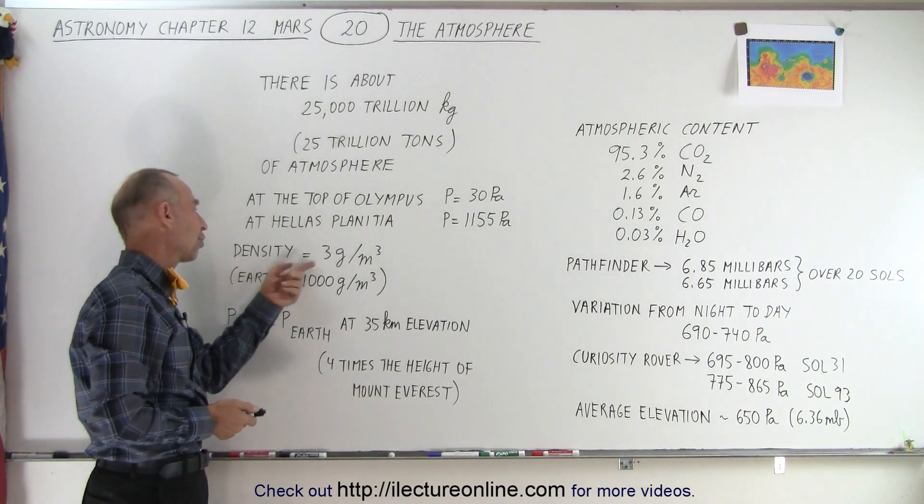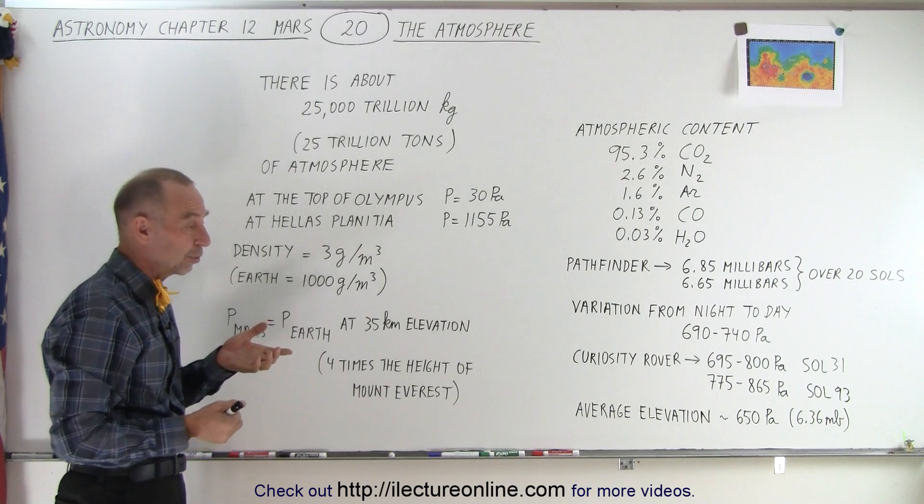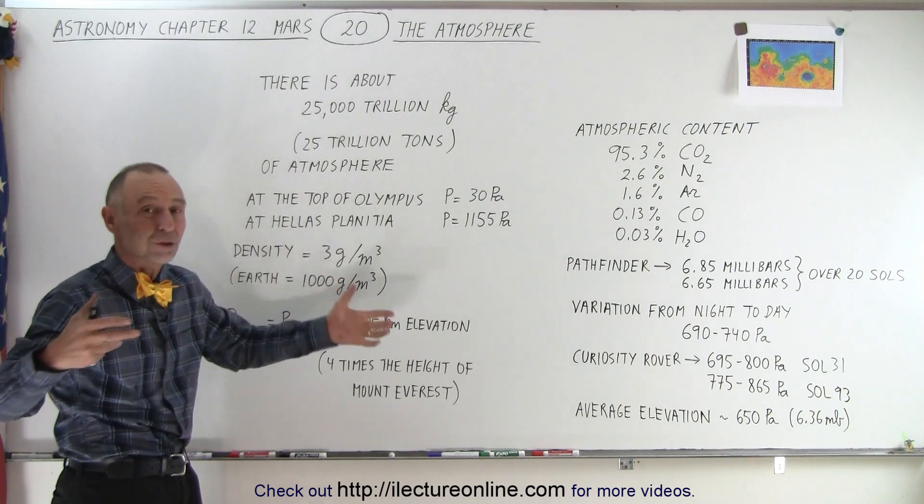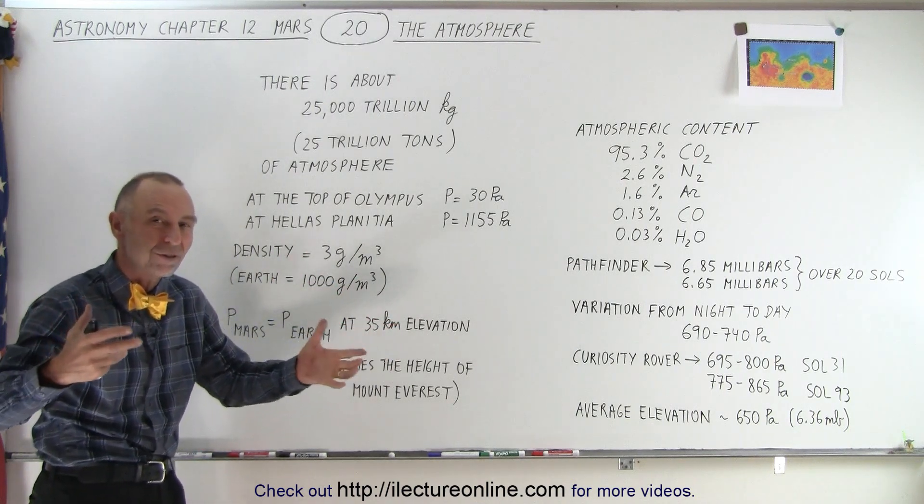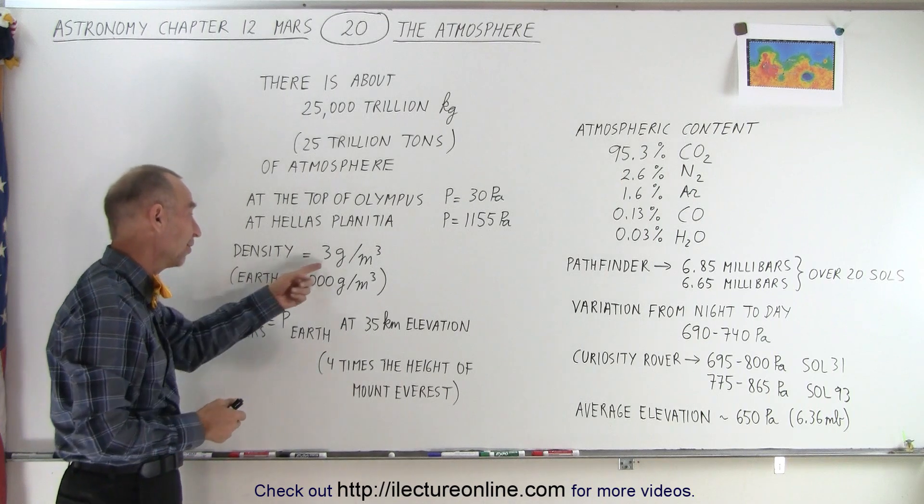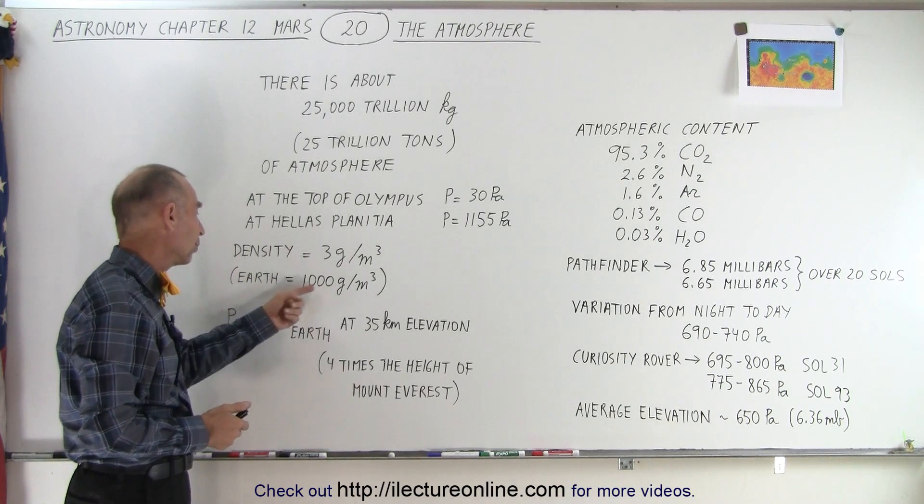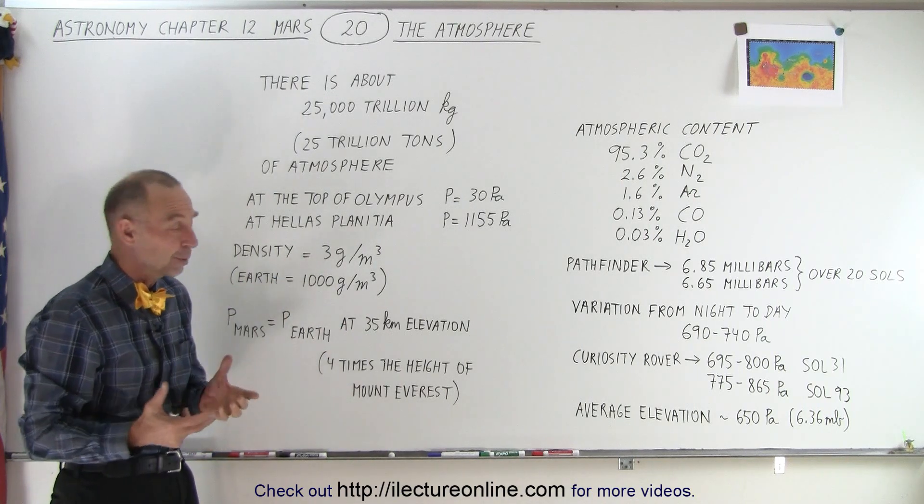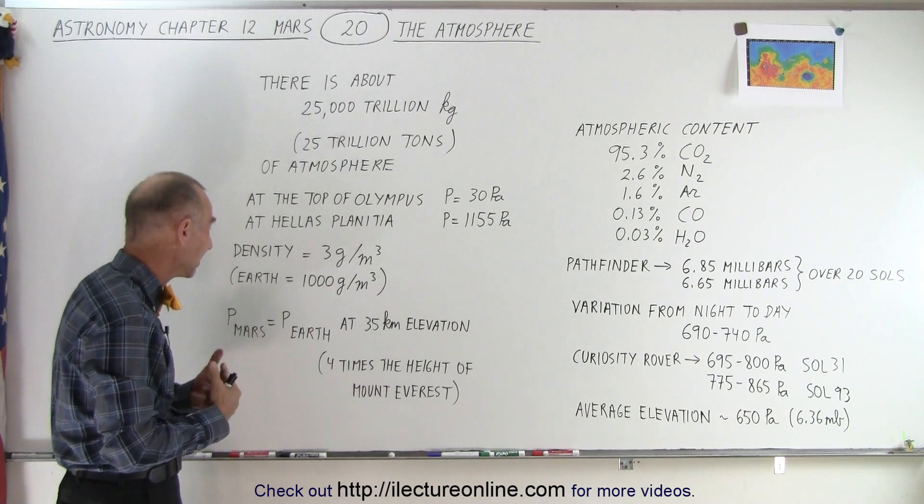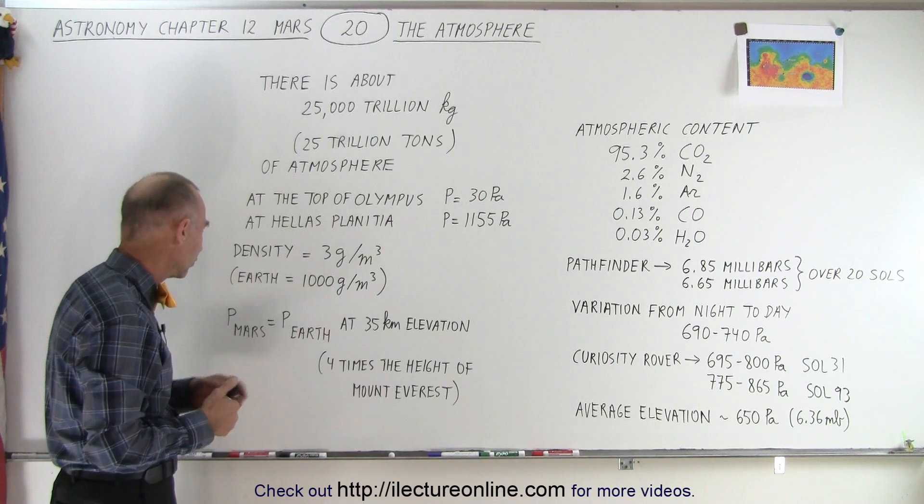The density of the atmosphere is about three grams per cubic meter, so that you would need about 10 cubic meters to have one ounce of atmosphere. So there's very little atmosphere in that respect compared to the Earth, which is about a thousand grams per cubic meter. So there's far less density on Mars compared to the Earth.